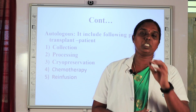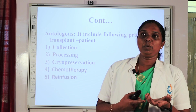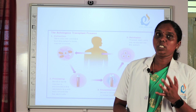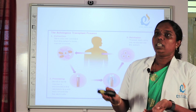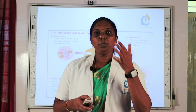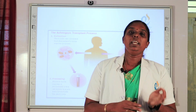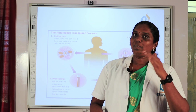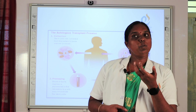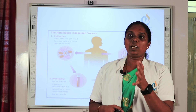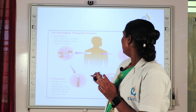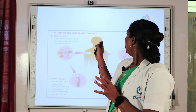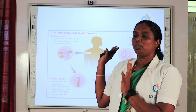The autologous bone marrow transplant involves five steps: collection, processing, cryopreservation, chemotherapy, and re-infusion. First, stem cells are collected from the patient's bone marrow or blood. Then they are processed in the laboratory and frozen — that is cryopreservation. Next, a high dose of chemotherapy or radiation therapy is given to destroy cancerous cells. Finally, the healthy stem cells are re-infused into the patient.